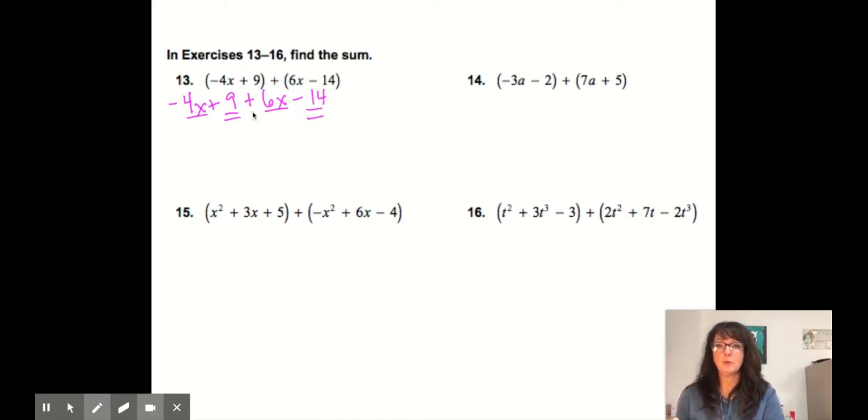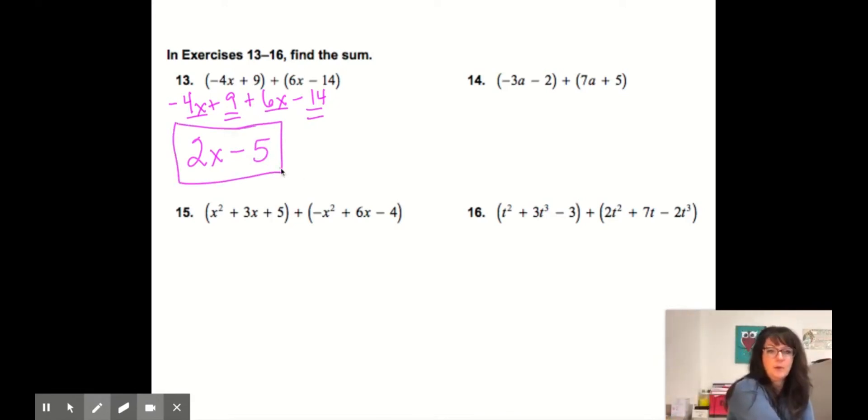Now we want to put these in standard form. So in this case, the variable would go first. So we have the negative 4x plus 6x, so we have a positive 2x. Then we have a negative 14 and a 9, so we'll have a negative 5. And that's in standard form.